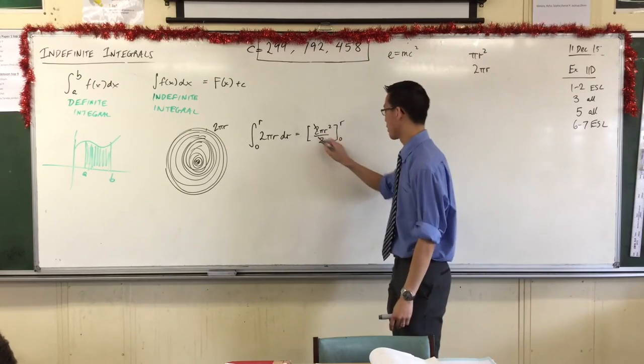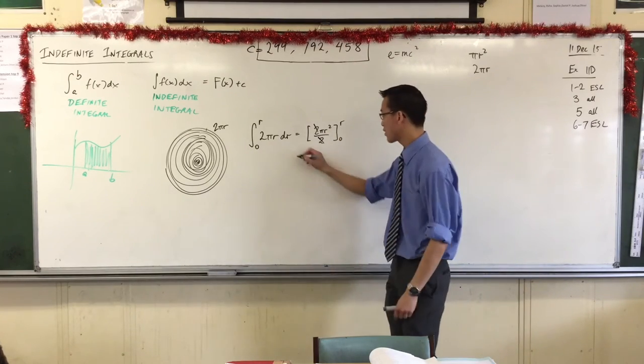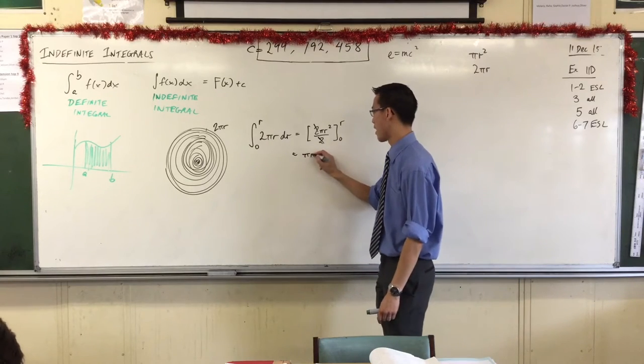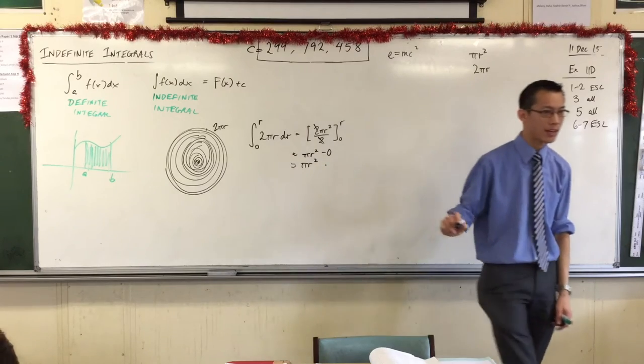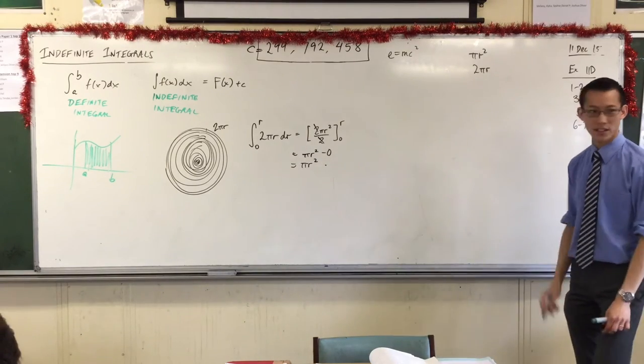But of course, a couple of things cancel. Don't forget, you are actually evaluating it at two boundaries, so what you're getting is πr² take away zero. That's really where this comes from.